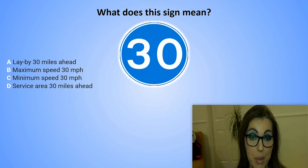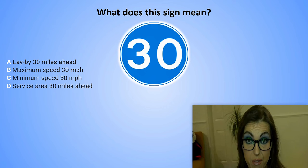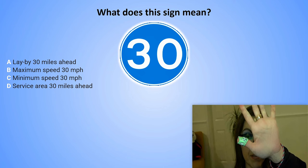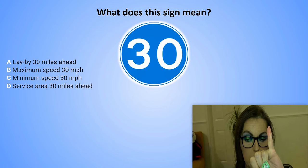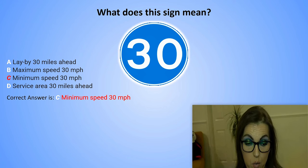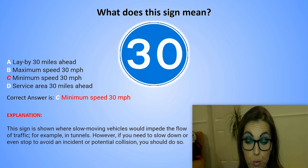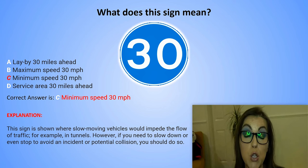What does this sign mean? A. Lay by 30 miles ahead. B. Maximum speed 30 miles per hour. C. Minimum speed 30 miles per hour. Or D. Service area 30 miles ahead. The correct answer is C. Minimum speed 30 miles per hour. Explanation: This sign is shown where slow moving vehicles would impede the flow of traffic — for example, in tunnels. However, if you need to slow down or even stop to avoid an incident or a potential collision, you should do so.